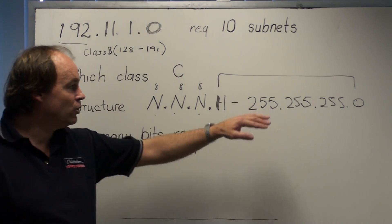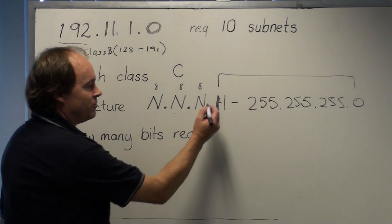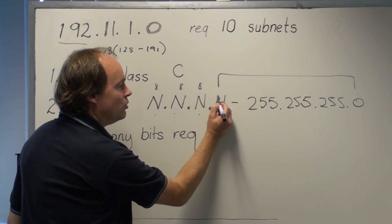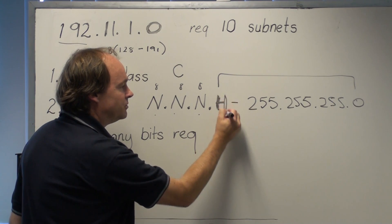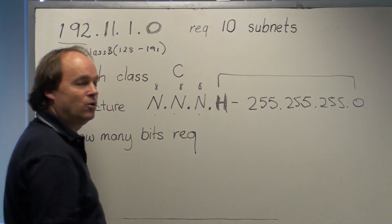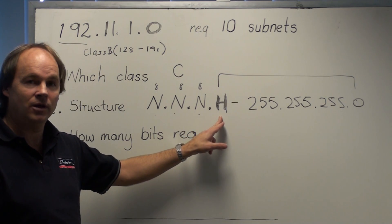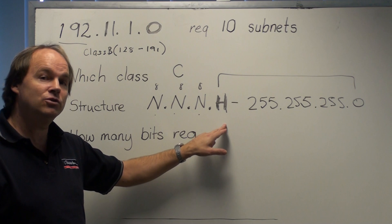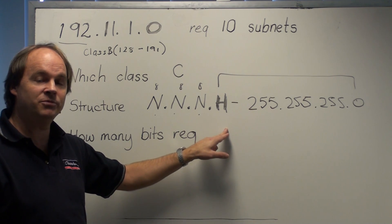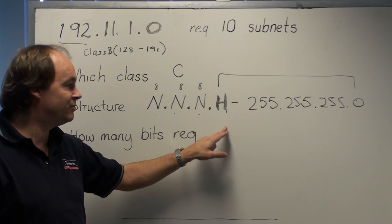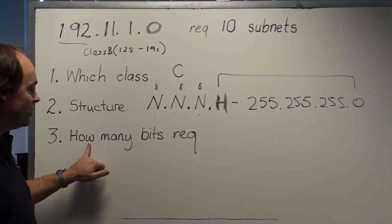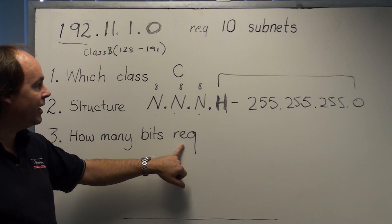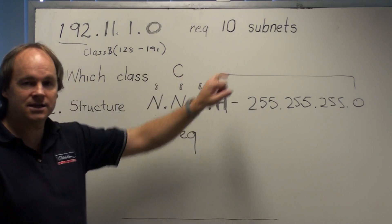So that's our structure we're working with. And what we understand from subnetting is we borrow from the host portion, from this portion. And there's 8 host bits to borrow from. We can't have all of them. There's always 2 left behind, no matter what class we subnet in. 2 bits are always left behind. The next question is, well how many bits is required to create 10 subnets?